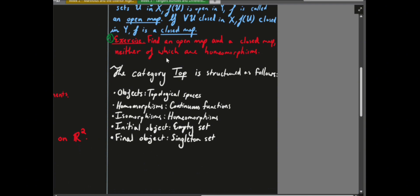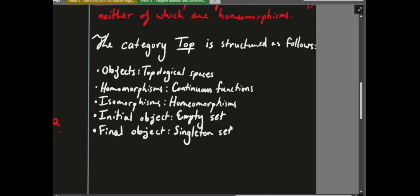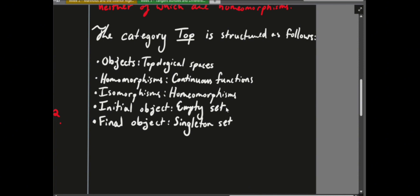This is an idea from category theory. In the topological category, the objects are topological spaces, the morphisms are precisely the continuous functions, the isomorphisms are precisely the homeomorphisms, the initial object is the empty set, and the final object is the singleton set — just like in the category of sets.